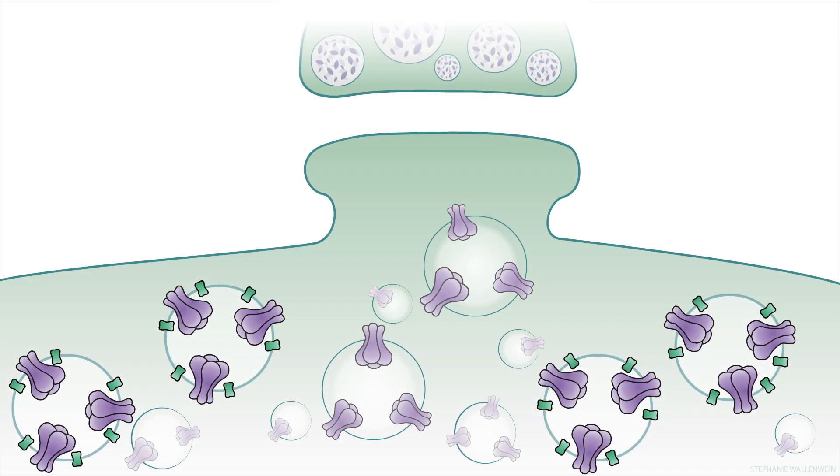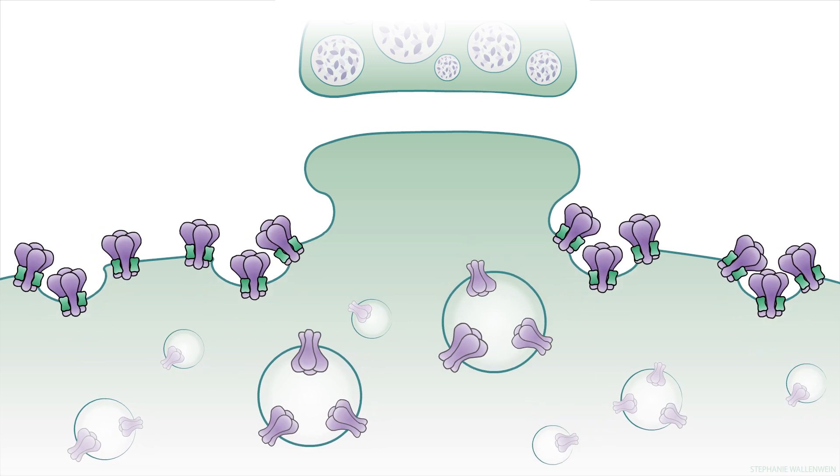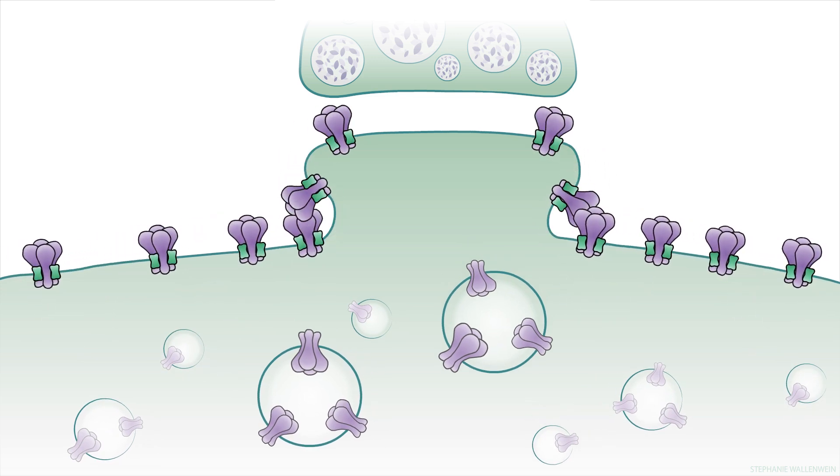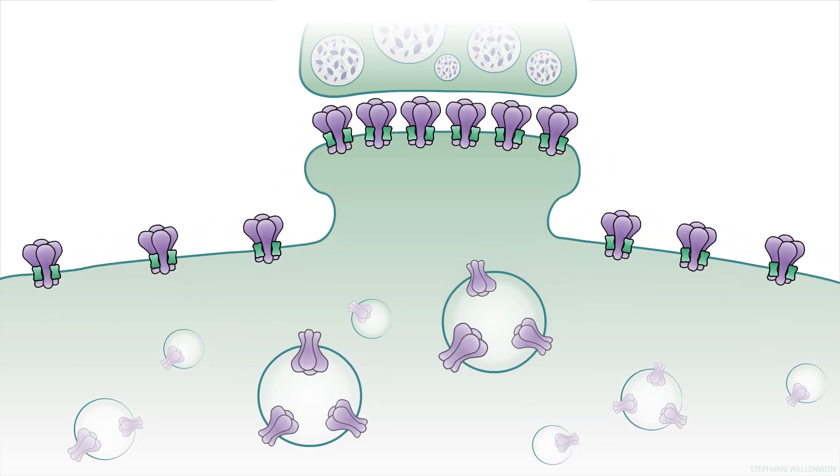In granule cells, both auxiliary subunits, CKAMP44 and TARP-γ8, promote the trafficking of AMPA receptors to the cell surface and to the synapse. The trafficking of AMPA receptors to the synapse requires the binding of the auxiliary subunits to post-synaptic density proteins.